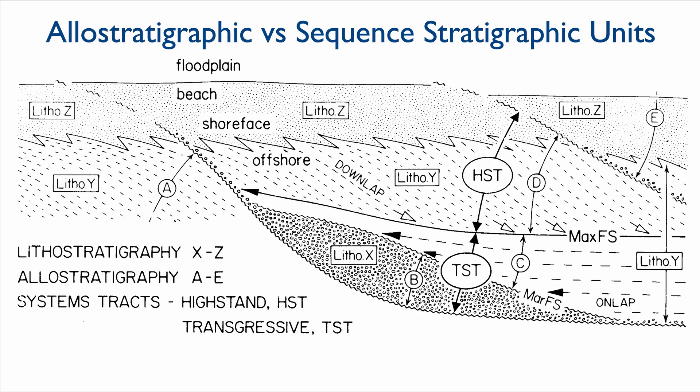So in this case, when we look at the difference between allostratigraphic and sequence stratigraphic units, the importance is that sequence stratigraphic units use unconformity, but not every unconformity is a sequence boundary for sequence stratigraphy. For sequence stratigraphic units, or for unconformity to be sequence stratigraphic boundaries, they need to be regional.